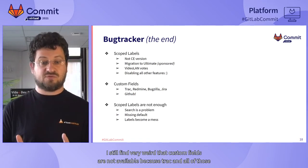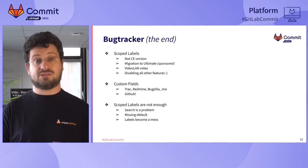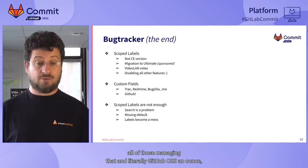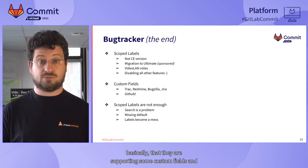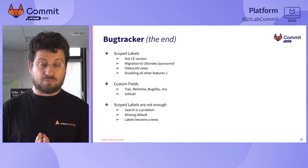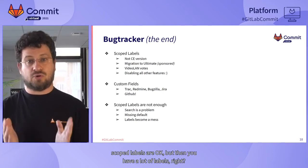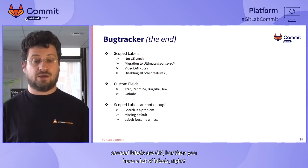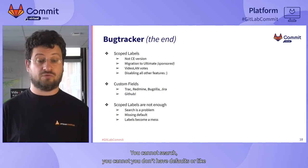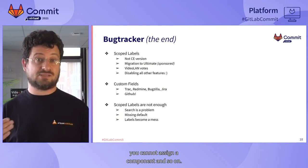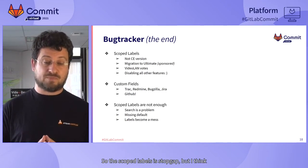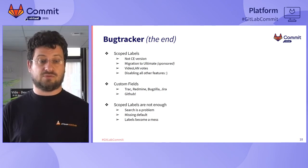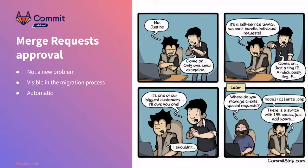I still find it very weird that custom fields are not available, because Trac, Redmine, Bugzilla, Jira, and all of those manage it. And lately, GitHub has announced that they're supporting some custom fields. Scope labels are okay, but then you have a lot of labels, you cannot search, you don't have defaults, you cannot assign a default component. So the scope label is a stopgap, but I think there needs to be something stronger in the future. Writing the migration script was long, but it's open source and people can use it — others are already using it to move from Trac to GitLab.